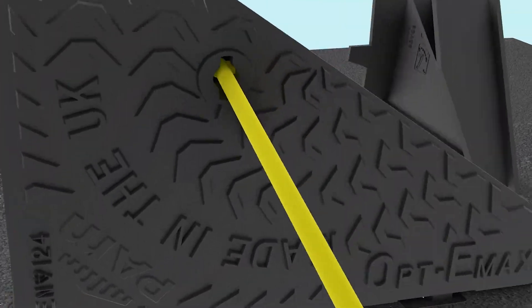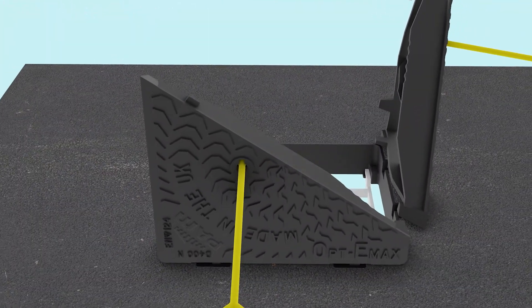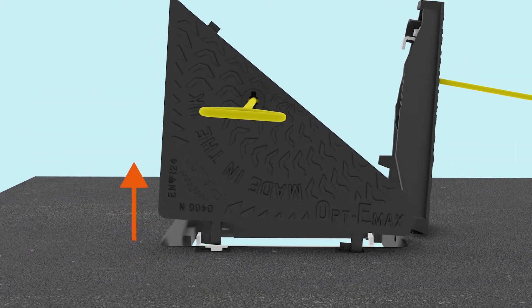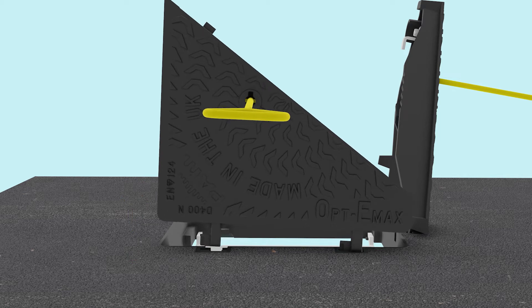If the cover sections require removal, this can be achieved without the need to lift them. To do this, pivot the cover section out of the frame and then walk it in the upright position away from the chamber opening.